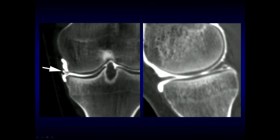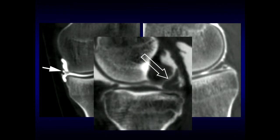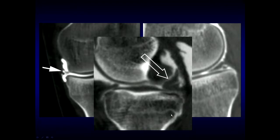CT arthrography examples: a horizontal cleft within the body of the medial meniscus following partial meniscectomy representing a recurrent tear; another patient showing a recurrent or residual tear of the undersurface of the posterior horn of the medial meniscus with contrast extending into the meniscus substance on sagittal reconstructions; and yet another patient with a large displaced flap tear of meniscal tissue in the region of the intercondylar notch, arising from the posterior horn of the medial meniscus — a recurrent unstable tear.